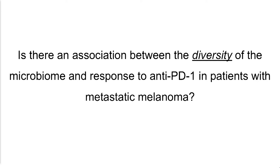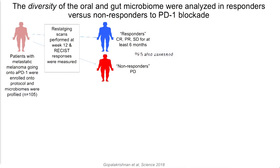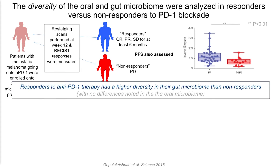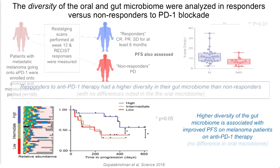The first question we asked — going back to the stem cell transplant literature — was whether there is an association between the diversity of the gut microbiome and response to cancer immunotherapy in melanoma patients. We dichotomized patients into responders or non-responders, with responders having a complete response, partial response, or at least stable disease for six months, whereas non-responders had progressed on therapy. What we found was quite striking: just like in the stem cell transplant literature, patients who had a higher diversity of their gut microbiome — generally associated with better gut health — had a much better outcome. When we broke this down into tertiles of diversity, patients with a high diversity of bacteria had a significantly prolonged progression-free survival. So diversity matters.